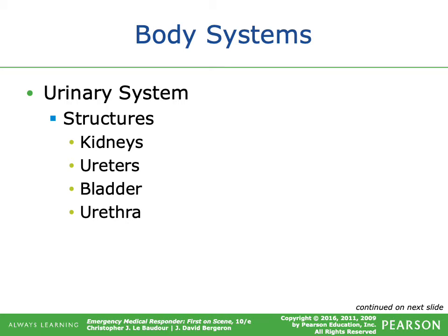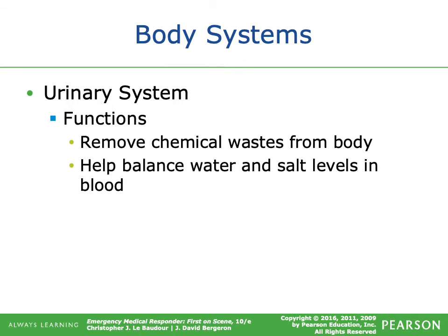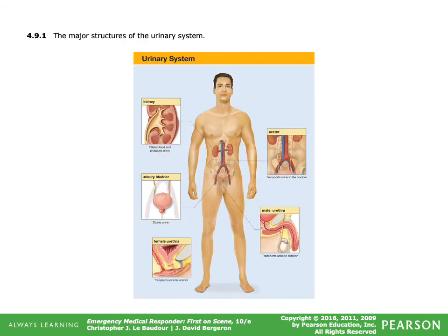The urinary system includes the kidneys, ureter, bladder, and urethra. Its functions are to remove chemical waste from the body and help balance water and salt levels in the blood.